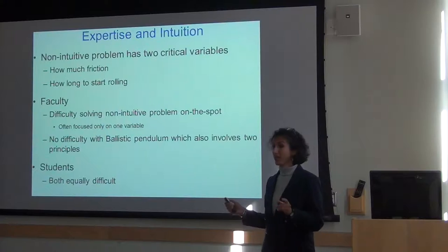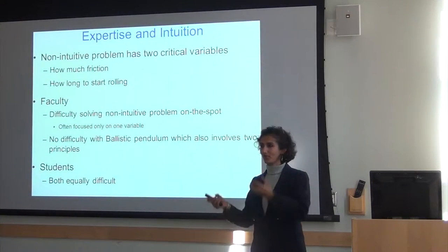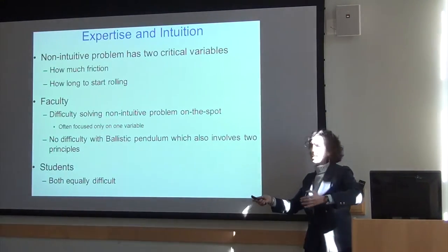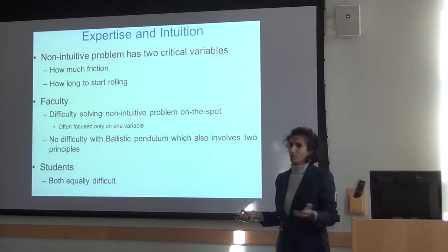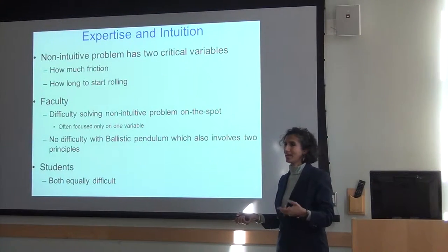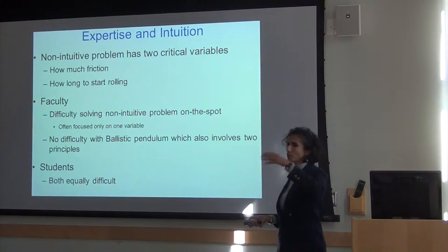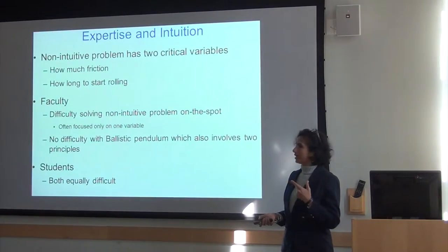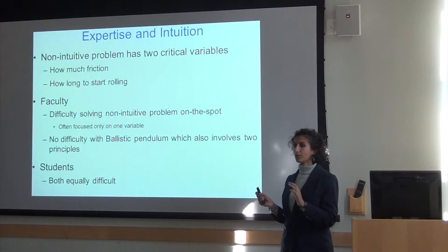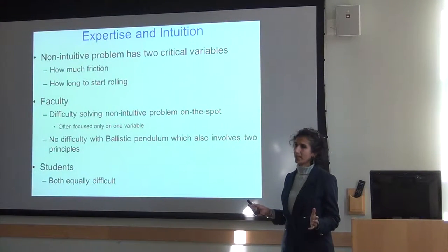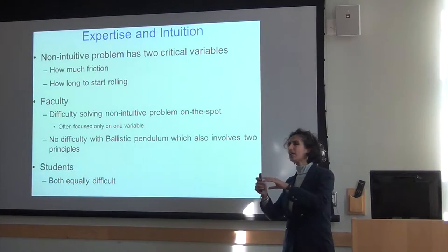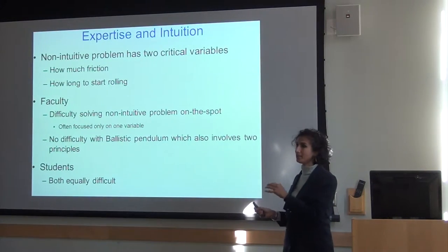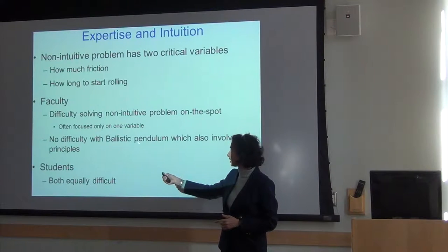Everybody was also given the ballistic pendulum problem, in which you have two putties. You raise one to a certain height, let it go, it comes down, collides with the other, and goes to a certain height. The question is: how do you find the final height in terms of the initial height? Professors immediately said you use conservation of mechanical energy, conservation of momentum during the collision, then conservation of mechanical energy again going up. The same two problems were given to several hundred introductory students — and they had equal difficulty with both, even though physics professors had said the ballistic pendulum would be much easier.